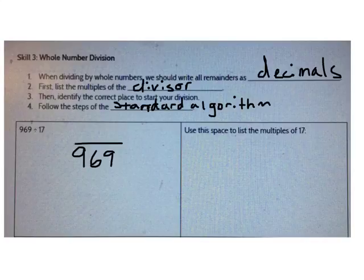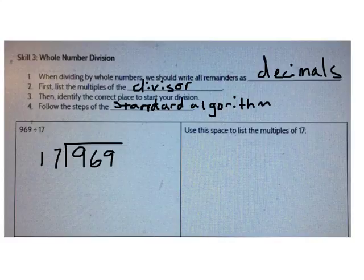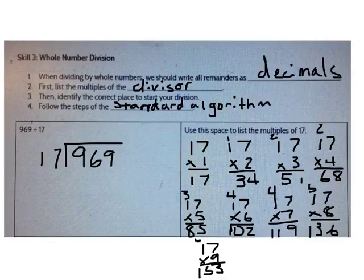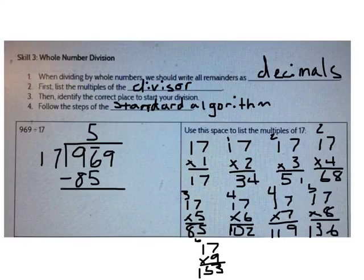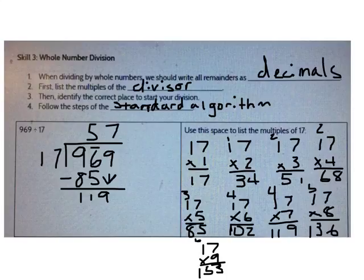969 divided by 17. Remember, 969 goes inside and 17 goes outside. Let's start by listing our multiples of 17. Go ahead and list your multiples of 17 on your paper, then enter them in the computer. Check your multiples with mine. Now, where can I start dividing? I can start dividing in the tens place. I can't split 900s, but I can split 96 tens. How many times does 17 go into 96? 17 goes into 96 five times. What's 5 times 17? It's 85. When I subtract, what do I have left over? I have 11. I can bring down my 9. How many times does 17 go into 119? 17 goes into 119 seven times. 7 times 17 is 119, so there's no remainder. The answer is 57.